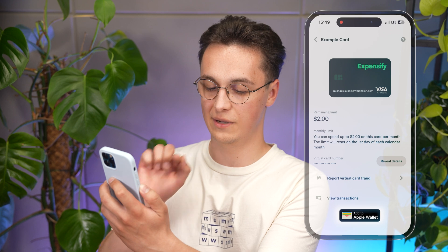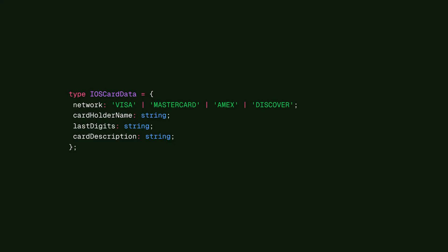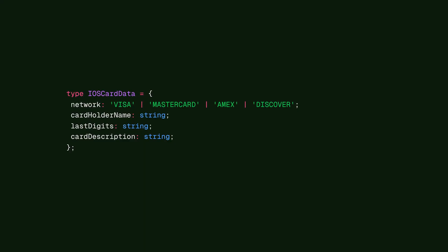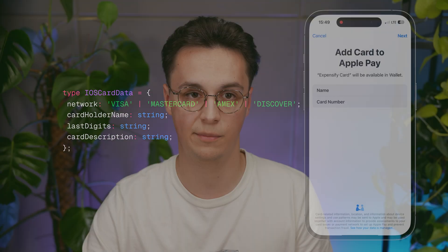Here I press this button, which uses the Add Card to Apple Wallet function from our library. This function is the heart of our package, managing the entire in-app provisioning flow. In addition to the card details, you can provide the cardholder name and the card description that will be visible inside the Apple Wallet.